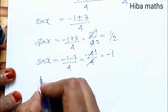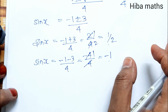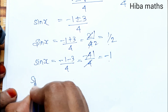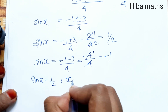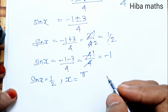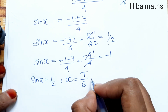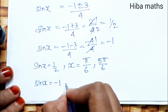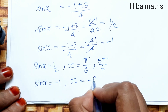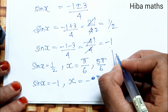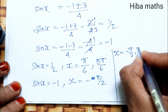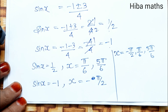So sinx values are minus 1 and 1 by 2. Given the limit minus pi to pi: when sinx equals 1 by 2, x equals pi by 6 and 5pi by 6. When sinx equals minus 1, that is minus 90 degrees, x equals minus pi by 2. So the values of x are minus pi by 2, pi by 6, and 5pi by 6.